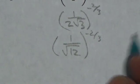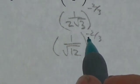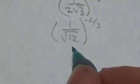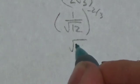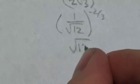Now the negative exponent here is going to cause a reciprocal. So instead of being 1 over root 12, this will be root 12 — specifically root 12 to the 2 thirds.